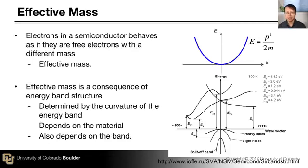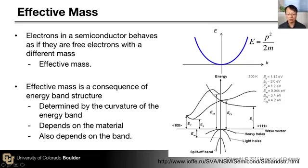Now let's discuss effective mass. Electrons in a semiconductor behave as if they are free carriers — free electrons moving in free space — except that they have a different mass. The effect of the atoms inside the solid, which must influence the electrons' movement, is described by this quantity called effective mass. The collective influence of atoms in the solid is captured by this different mass, and effective mass is a consequence of the energy band structure, defined by the curvature of the energy band.